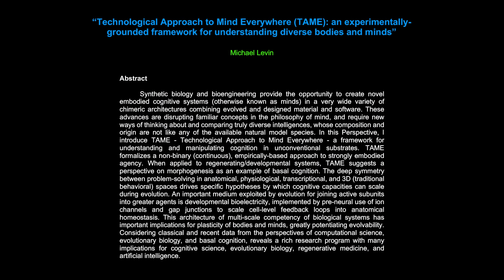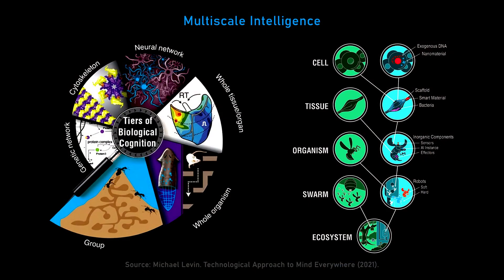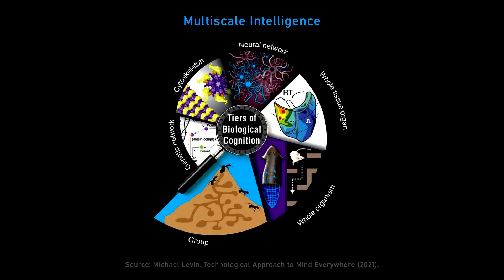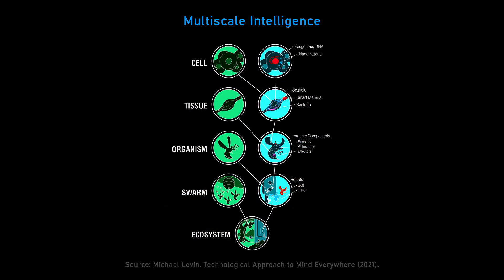Let's lay out some foundations. One useful one comes from the paper 'Technological Approach to Mind Everywhere,' an experimentally grounded framework for understanding diverse bodies and minds. Could you tell me about this framework and about figure one, which has a few components: the tiers of biological cognition going from group to whole organism, tissue, organ, neural network, cytoskeleton, genetic network, and layers of biological systems from ecosystem down to swarm, organism, tissue, and cell?